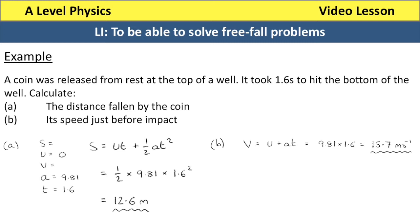To work out the distance fallen we are working out a value for S, so we use S equals UT plus a half AT squared. U is 0 so anything times by 0 is 0, meaning UT simply isn't there. So all we need to do is a half multiplied by 9.81 multiplied by 1.6 squared, which comes out to 12.6 metres as the distance fallen by the coin.